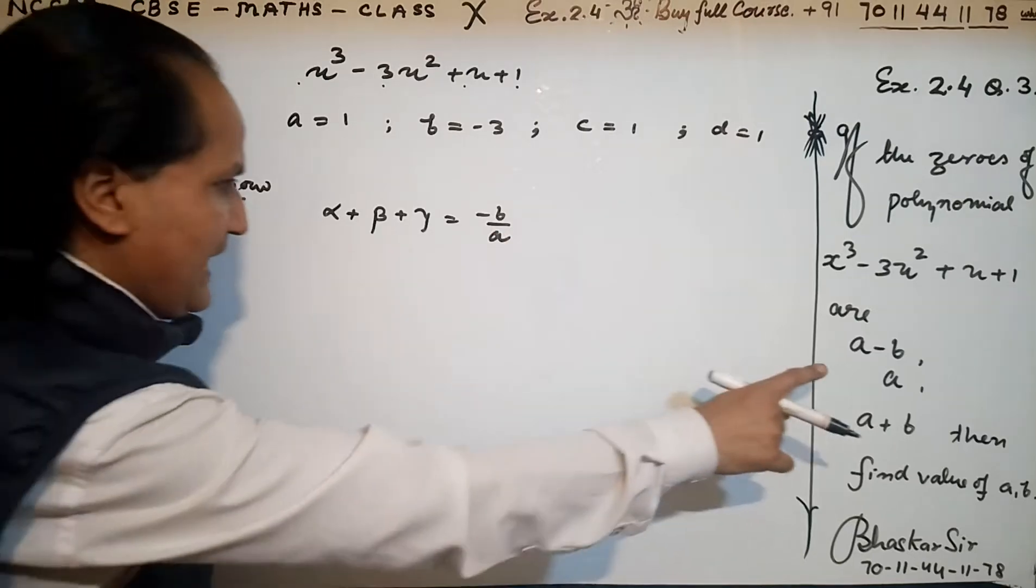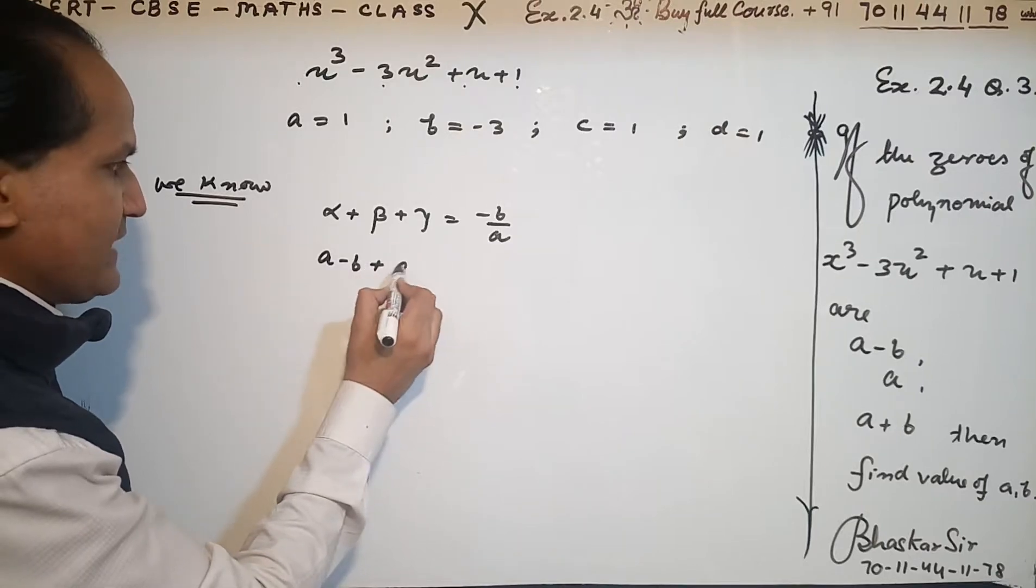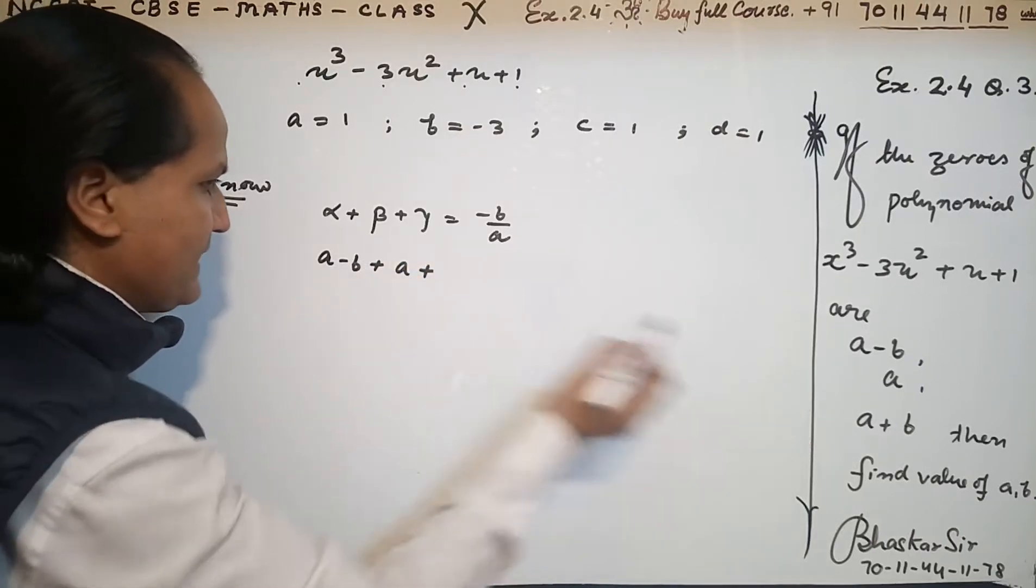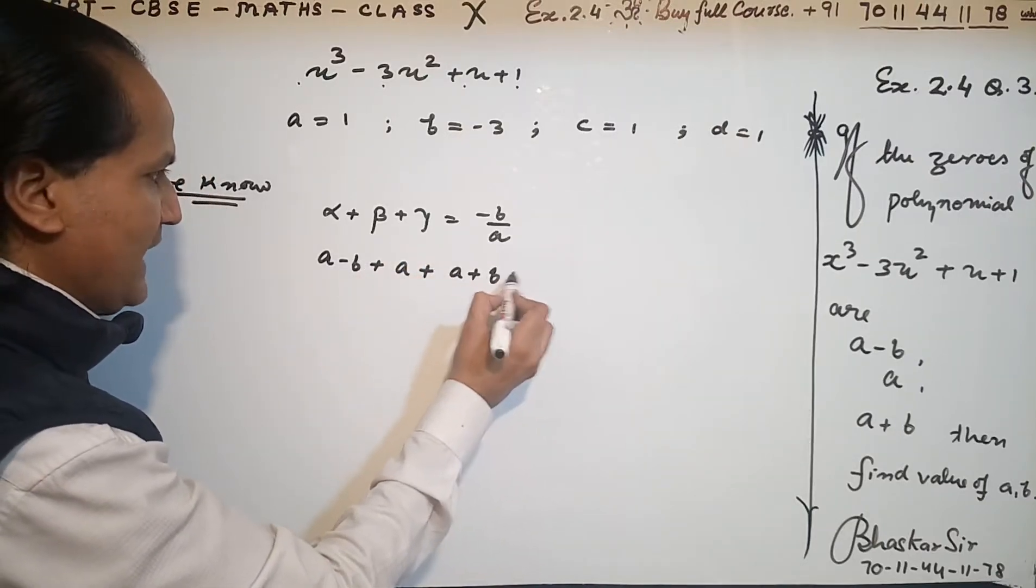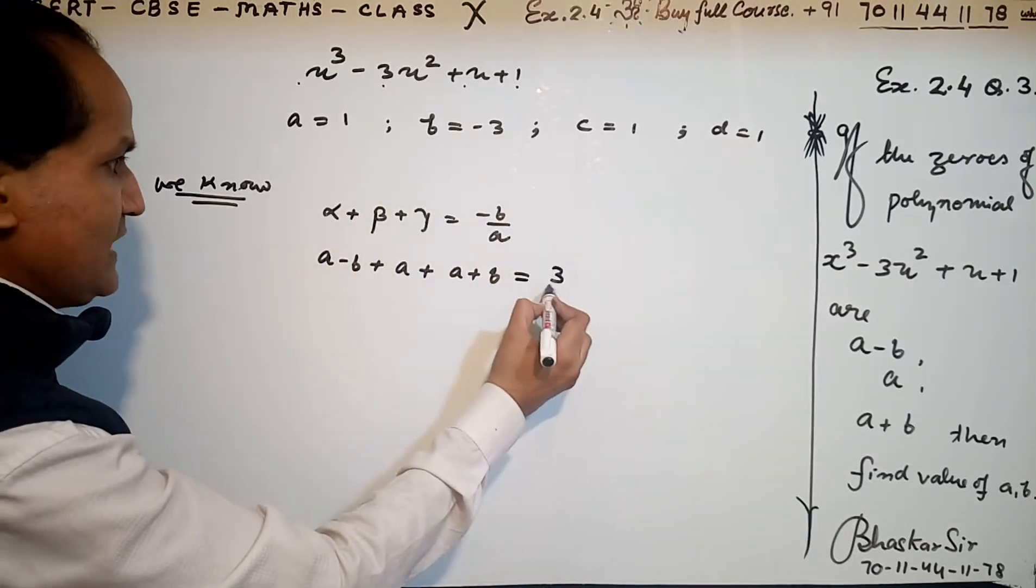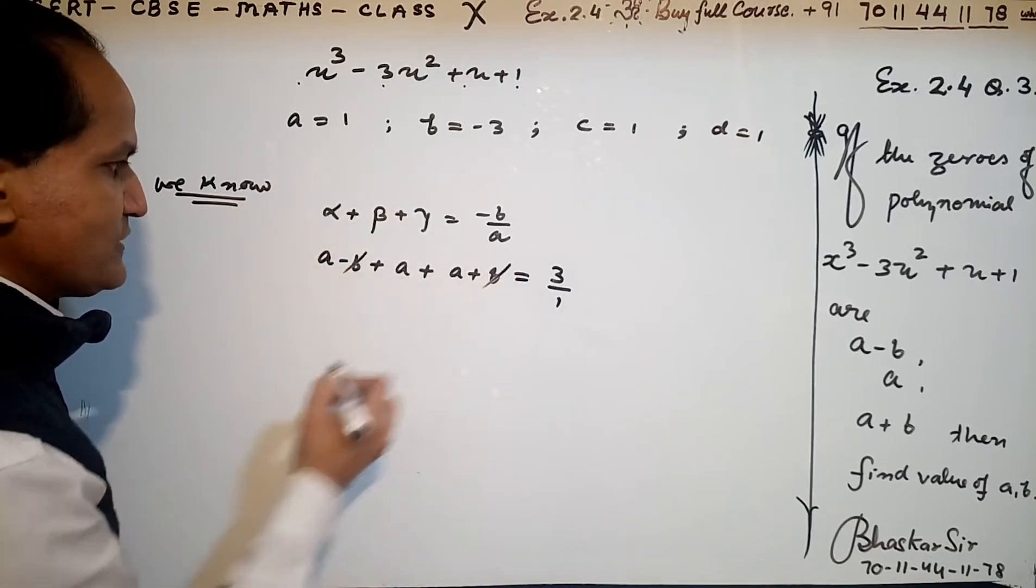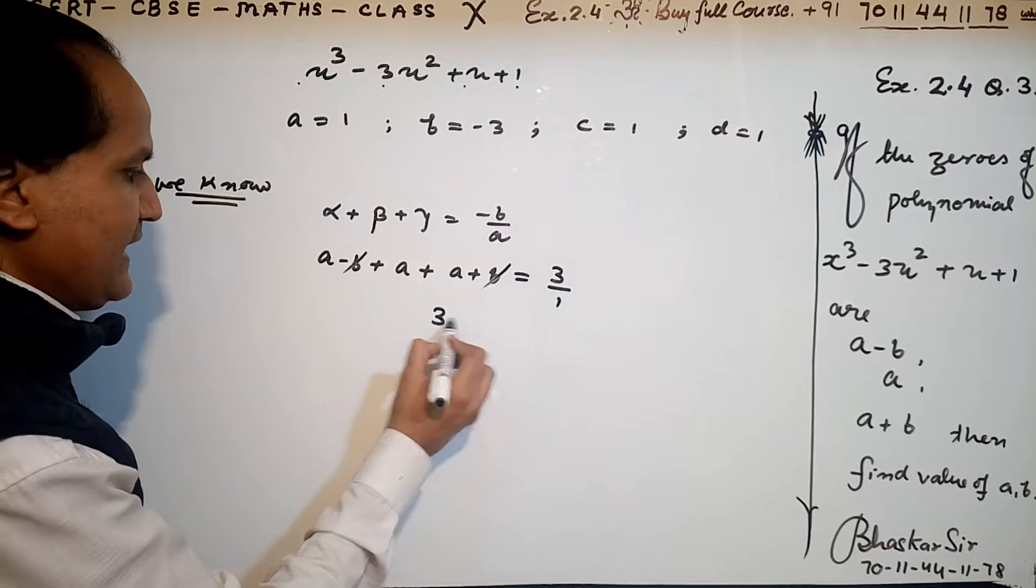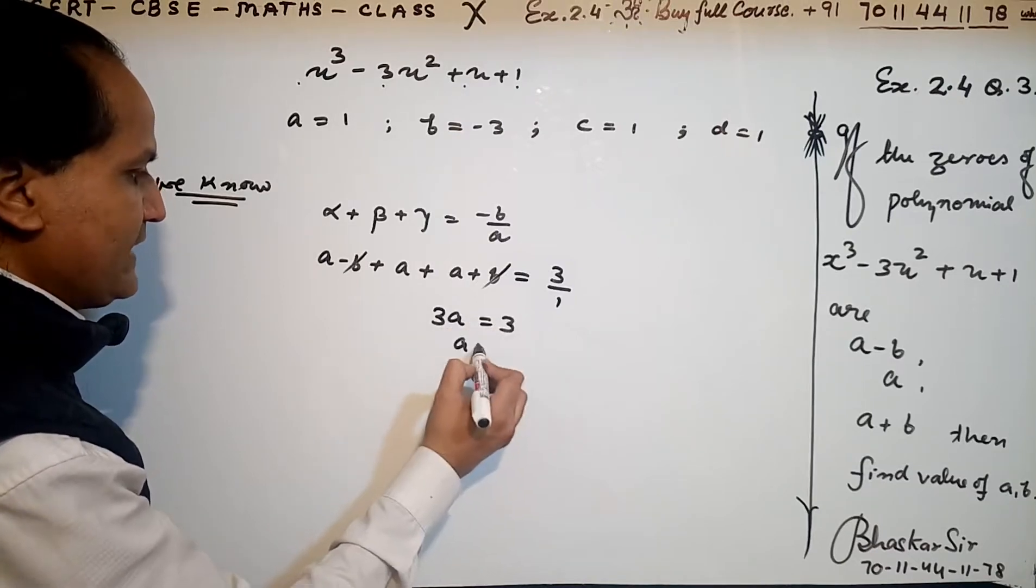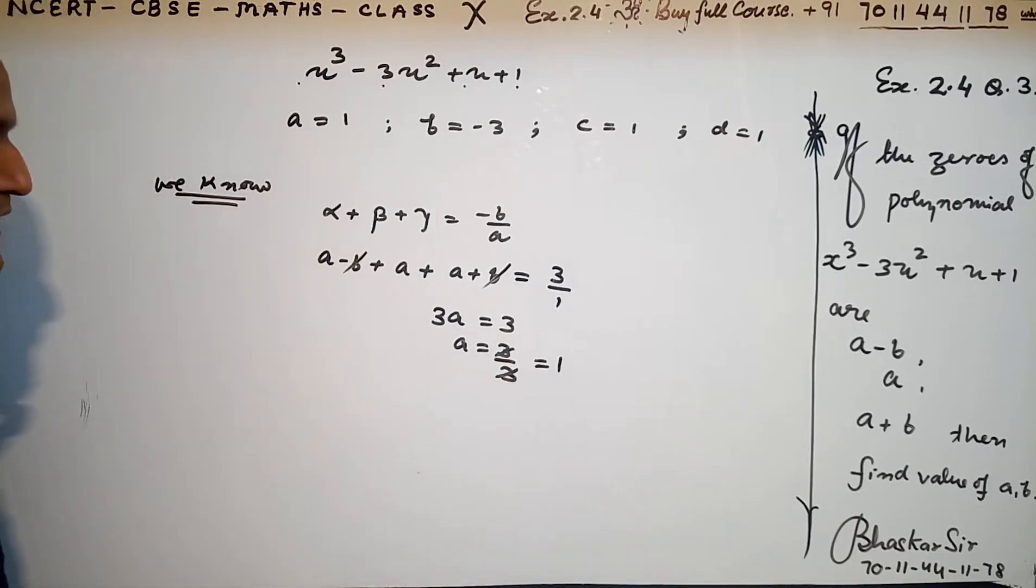α is given as a - b, β is given as a, and γ is given as a + b. So (a - b) + a + (a + b) = -(-3)/1 = 3. Canceling the negative b with positive b, we get 3a = 3, therefore a = 1.